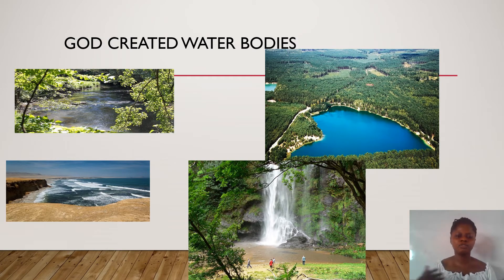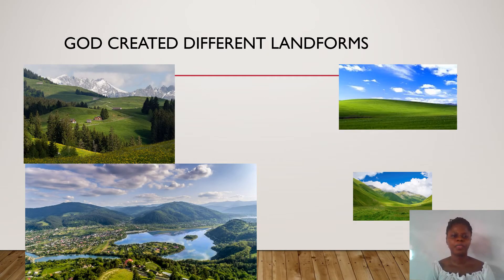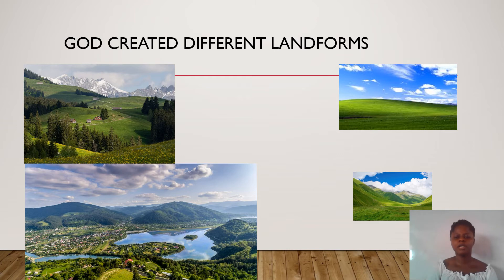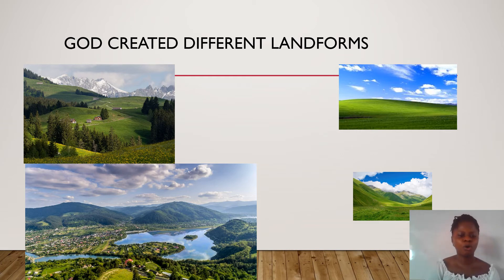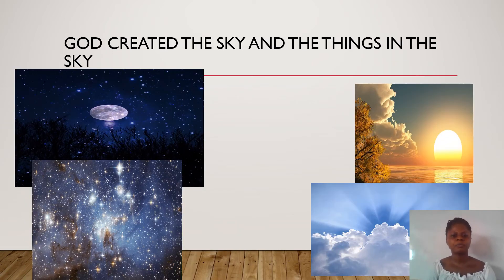He also created water bodies. He created rivers, seas, lakes, streams, and lagoons — they were all created by God. He also created different types of landforms: mountains, hills, valleys, and flat lands. They were all created by God.